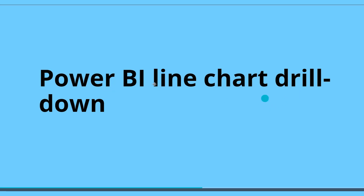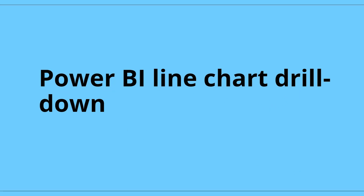Now we will learn about the Power BI line chart drill down features. The drill feature requires a hierarchy — if there is no hierarchy, we cannot use the drill down feature. In the drill down feature there are two things: drill up and drill down. Drill up is used to see the previous level of information and drill down is to see the next level. There are two ways to access the drill features: via the icons at the top of the visual, or by right-clicking on the visual.